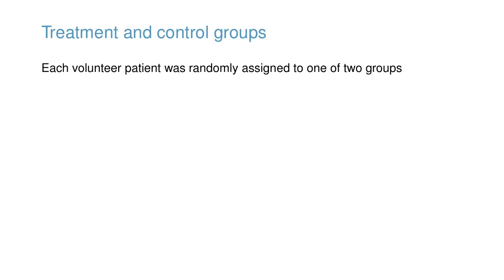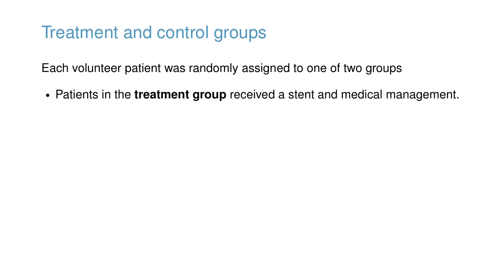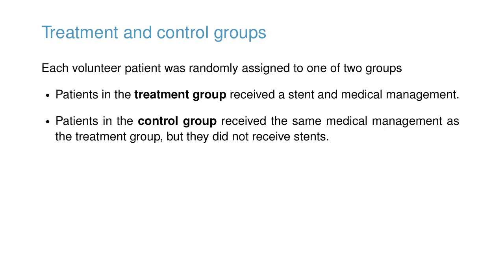The researchers who asked this question collected data on 451 at-risk patients. Each volunteer patient was randomly assigned to one of two groups. Patients in the treatment group received a stent and medical management. The medical management included medications, management of risk factors, and help in lifestyle modification. Patients in the control group received the same medical management as the treatment group, but they did not receive stents.